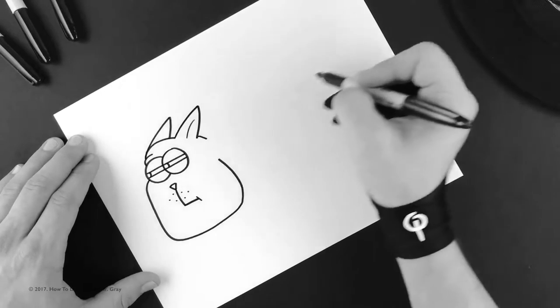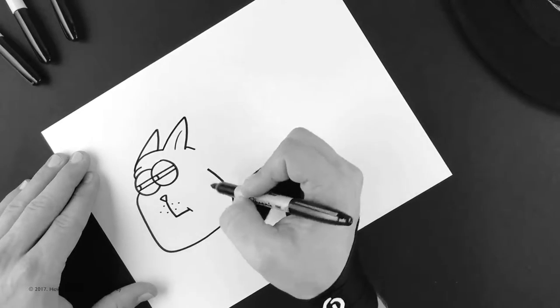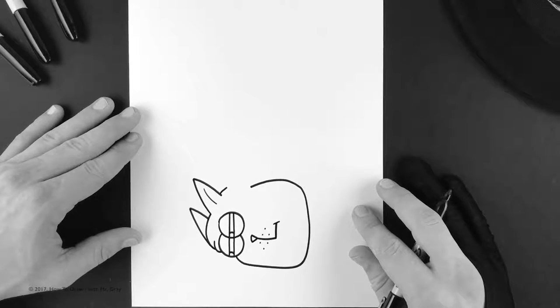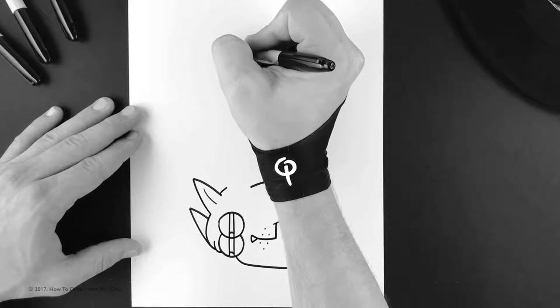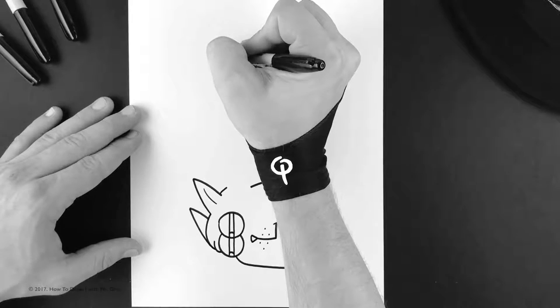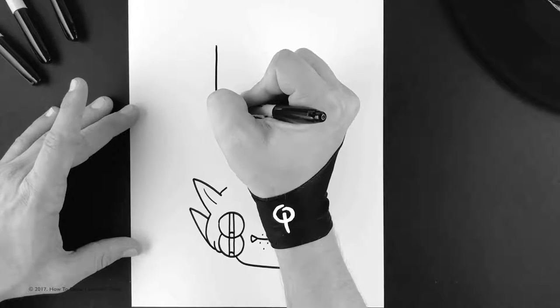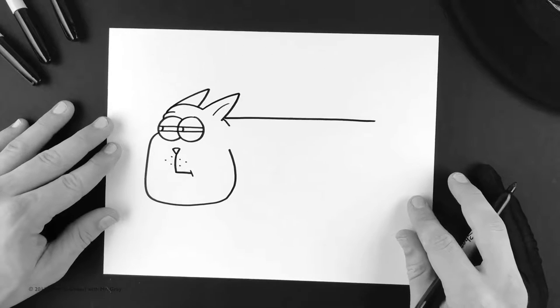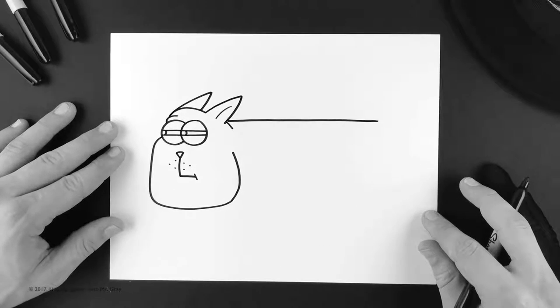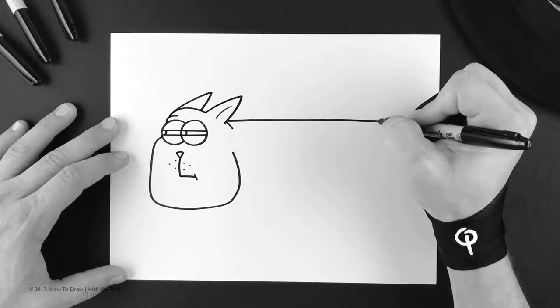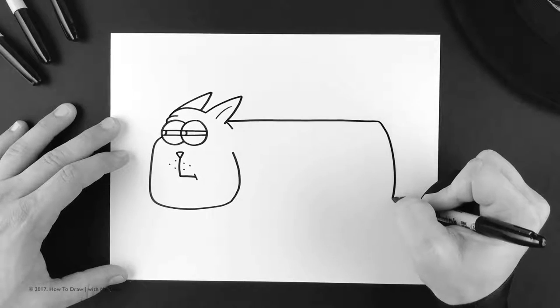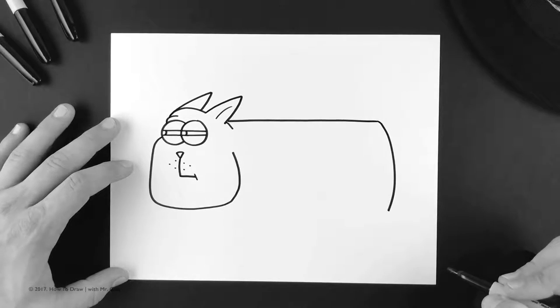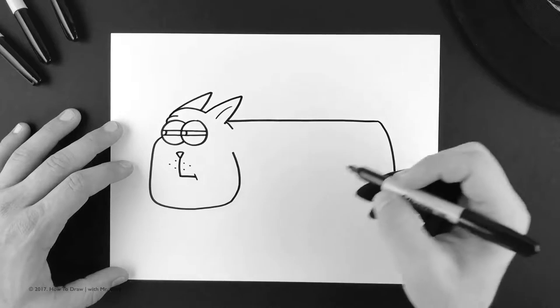Now we're gonna do his body. His body is basically a huge rectangle, so let's make it easier. Let's just do one straight line just like this connecting the back of his head. Then we're gonna bring this line and curve it all the way down right about there.